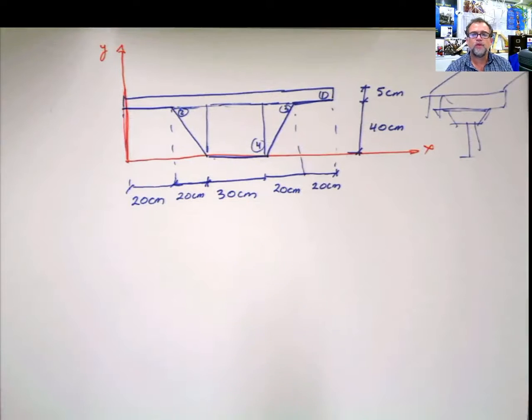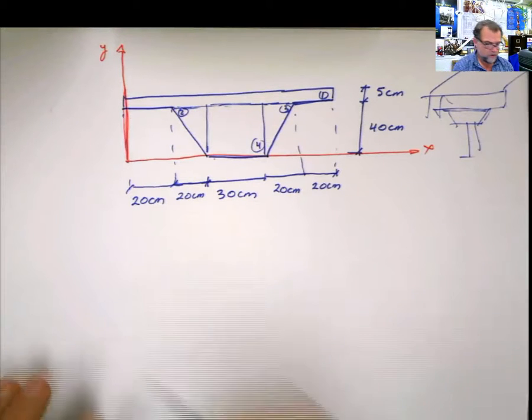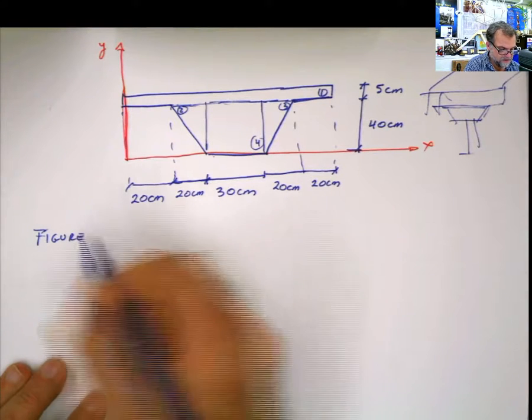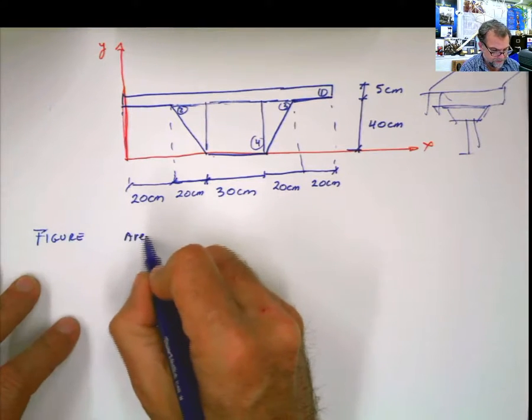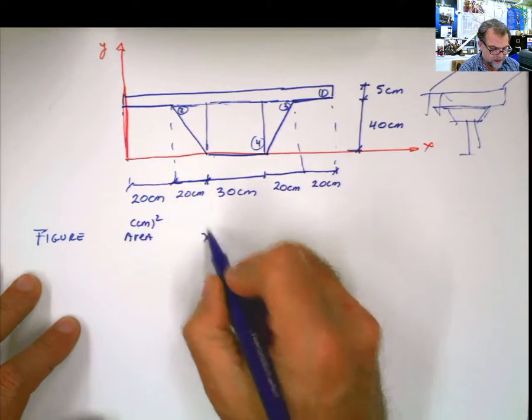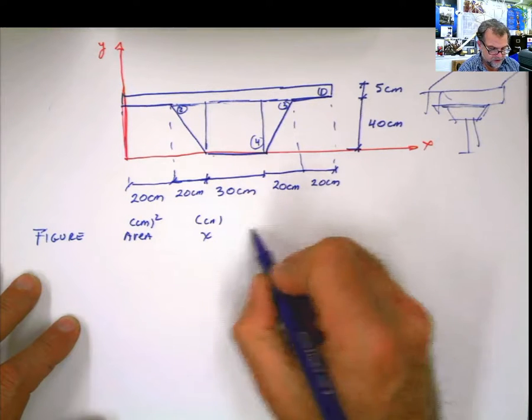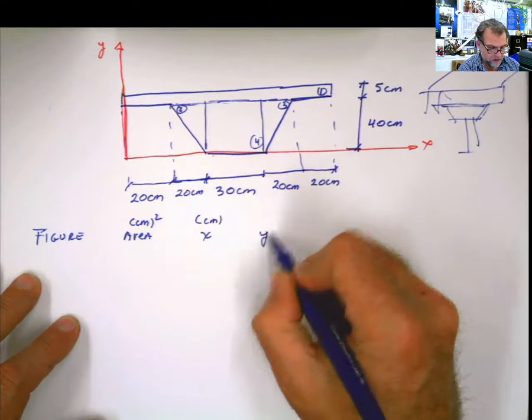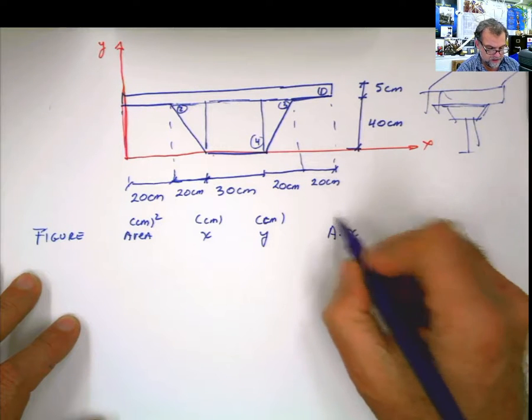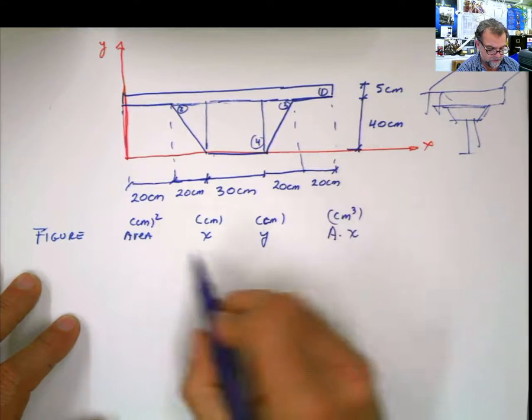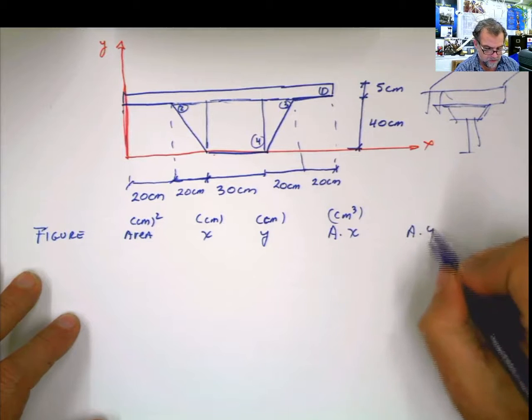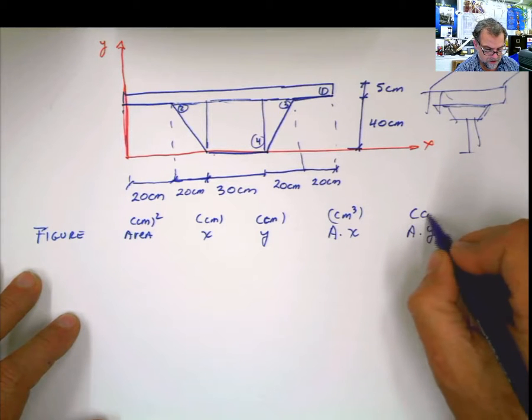While you are learning how to do this, I recommend you to use a table. And the table for doing this, I say figure. That's the first one. And then area, which in this case is going to be in centimeters squared. Then x, centimeters. Y, also in centimeters. And then A times x, which is centimeters cubed, because this is centimeter squared times centimeter. And A times y, which is centimeters cubed also.